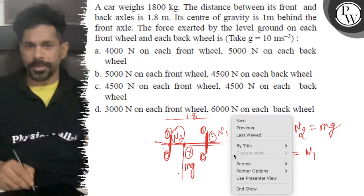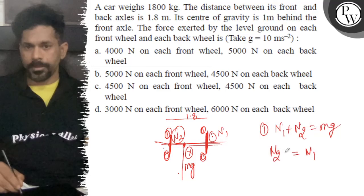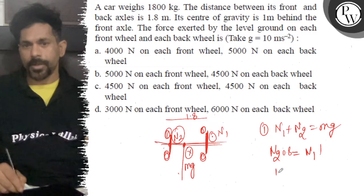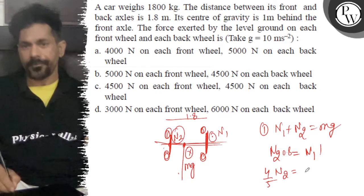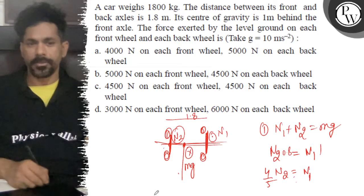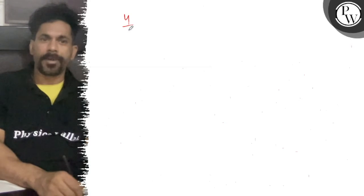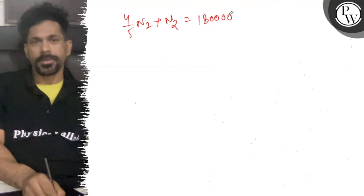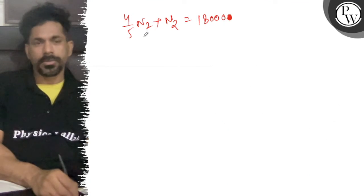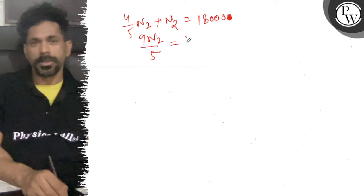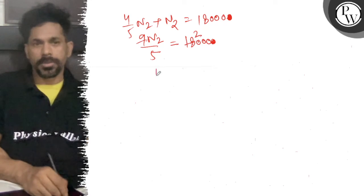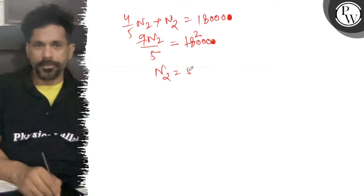n2 times 0.8 equals n1 times 1. So n2 becomes 1.8 by 5 of n2 plus n2 equals mg which is 18,000. So 9n2 by 5 equals 18,000. So this is 2, so n2 is... 5 to 10,000.